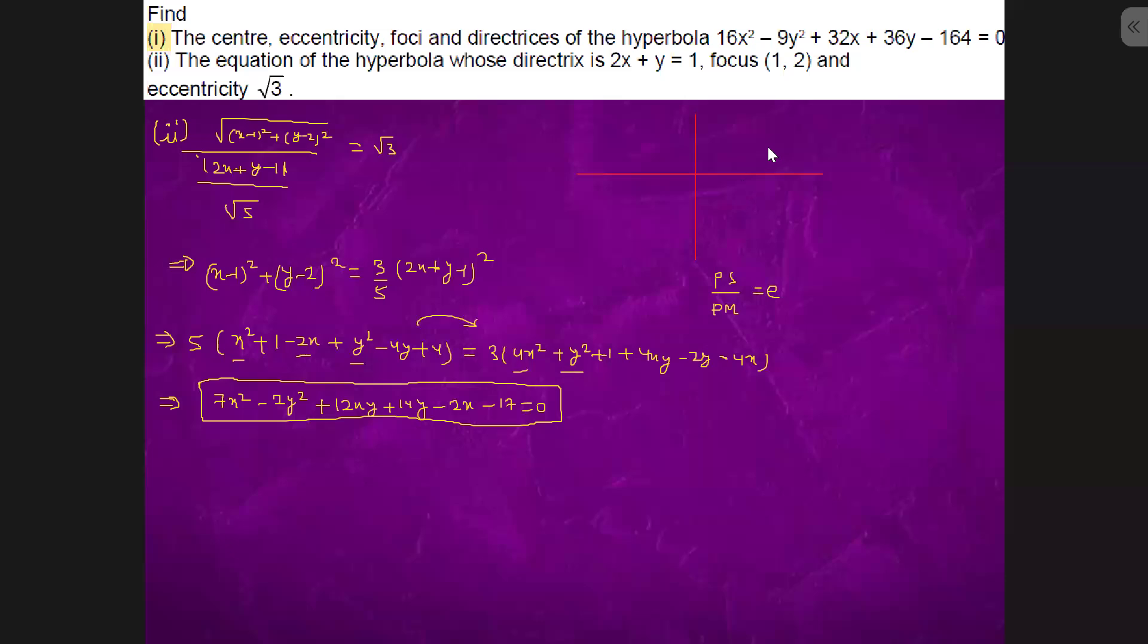So we know that if this is a hyperbola and if this is a directrix, any point P, x comma y, on the hyperbola.